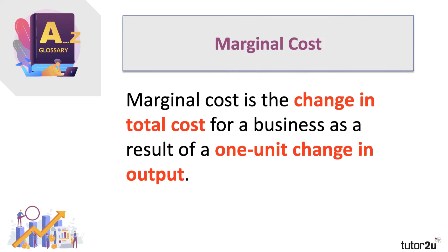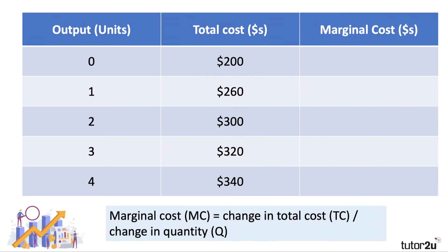To a business, marginal cost is the change in their total costs as a result of a one unit change in production. Essentially it's a concept that describes the increase in the total production cost when producing or supplying one more unit of a good or service. There are no diagrams in this video — just some simple calculations so you get a feel for marginal cost.